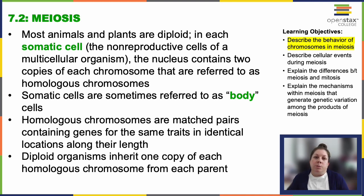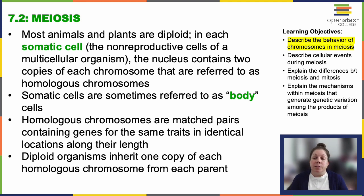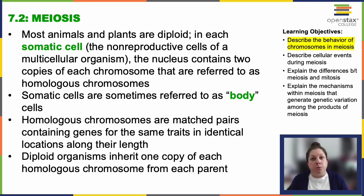Diploid organisms inherit one set of each homologous chromosome from each parent — one from the genetic mother and one from the genetic father — forming a complete diploid set. In animals, haploid cells carrying a single copy of each homologous chromosome exist solely within gametes, only in sperm and eggs, which will then fuse to produce the diploid cell in a process we call fertilization.